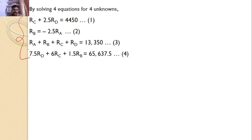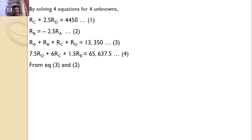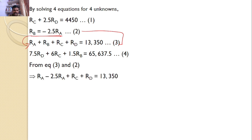Taking equations 3 and 2: substituting R_B equals minus 2.5·R_A into equation 3 gives R_A minus 2.5·R_A plus R_C plus R_D equals 13,350, which simplifies to Equation 5: R_C plus R_D minus 1.5·R_A equals 13,350.